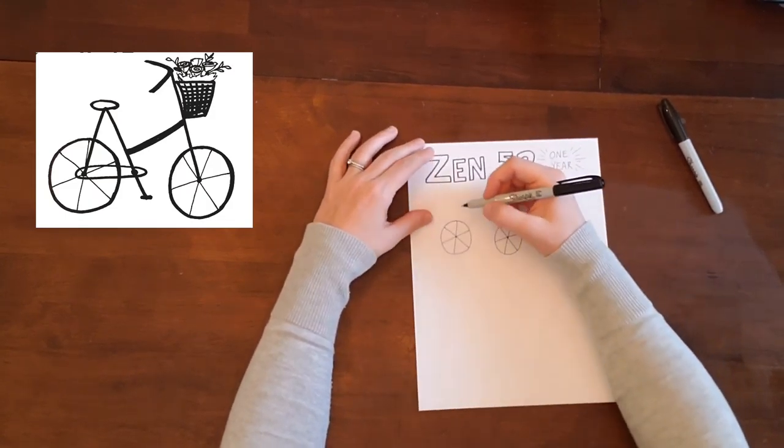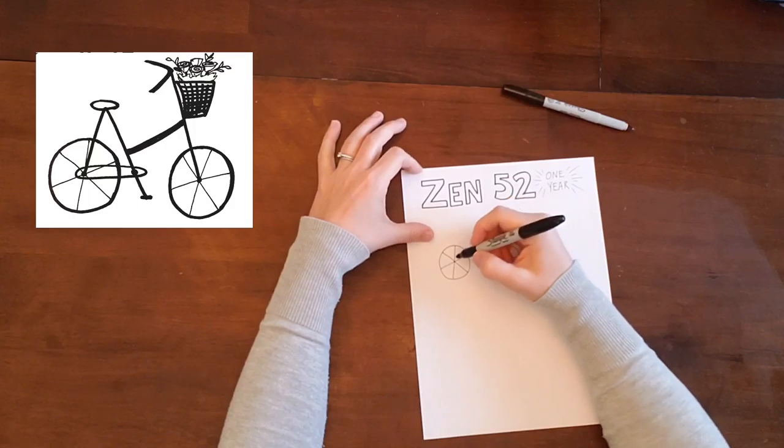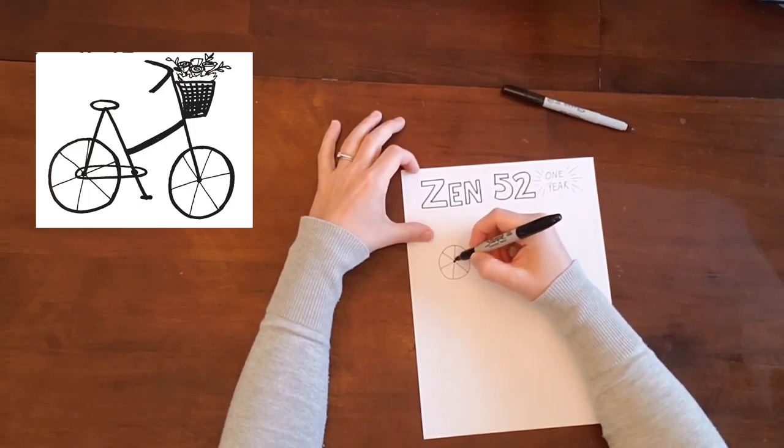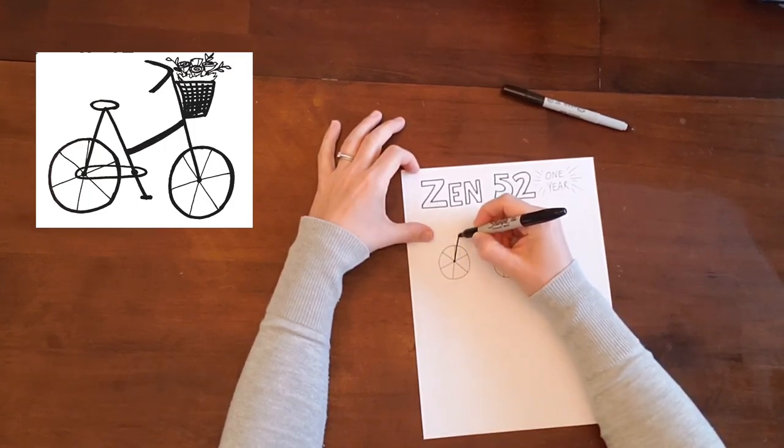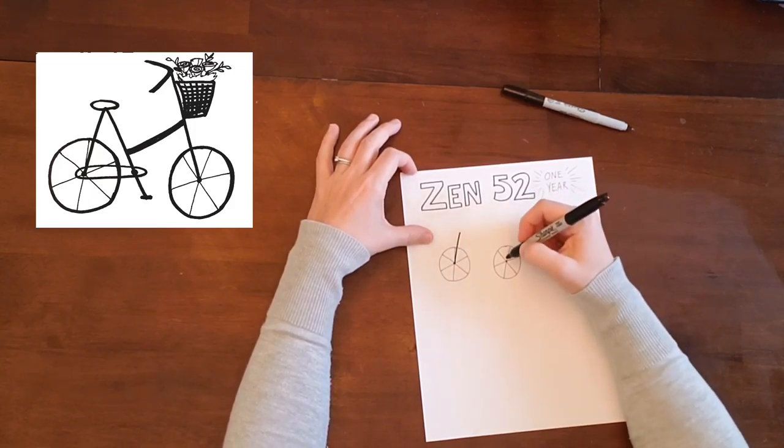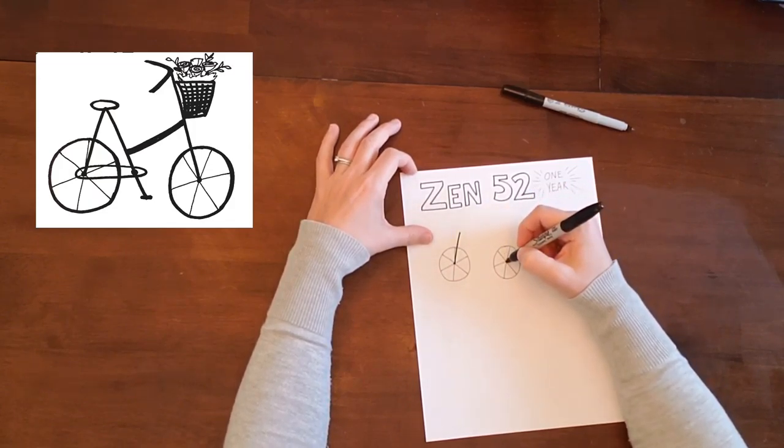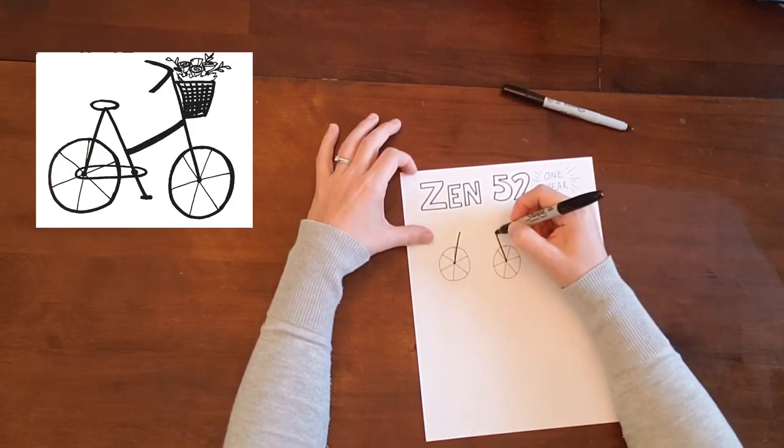We're going to draw a bicycle. I'm going to switch over to my chubby marker here. From this little center point, I'm going to draw up at an angle, the bike seat stand. Then from this point here, I'm going to draw a taller one that's angled in also.